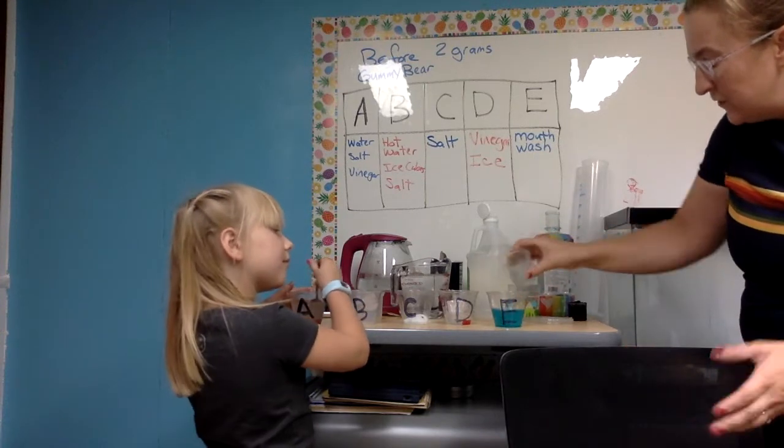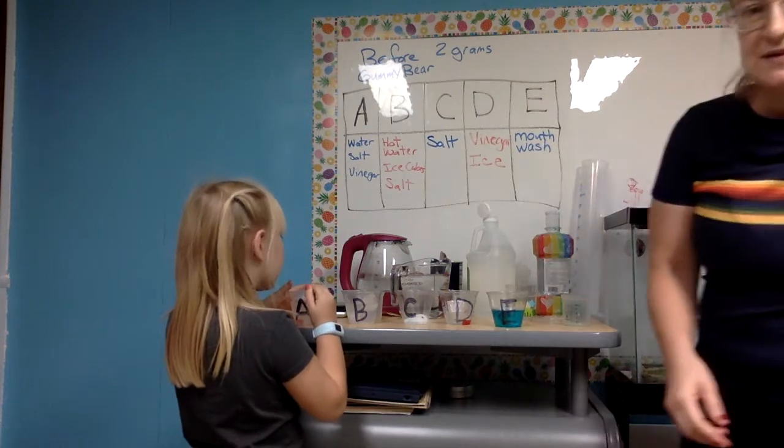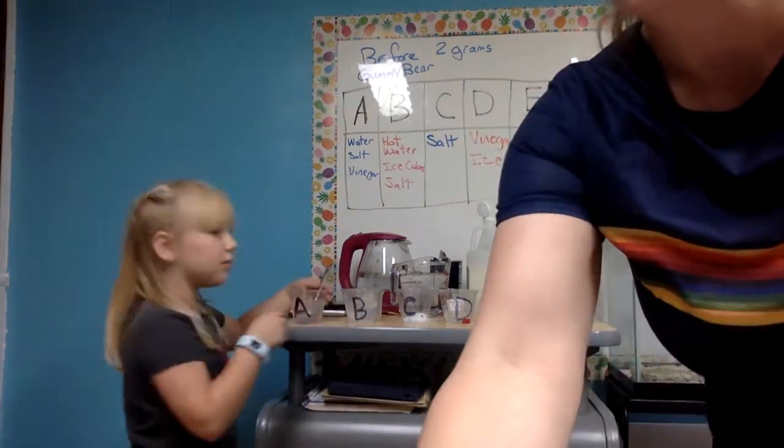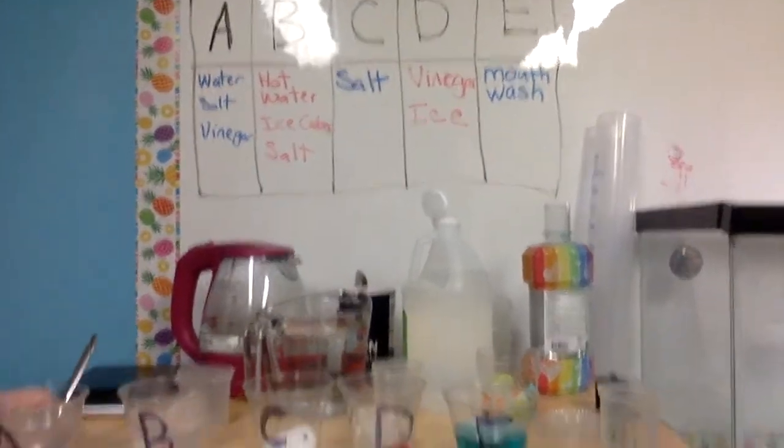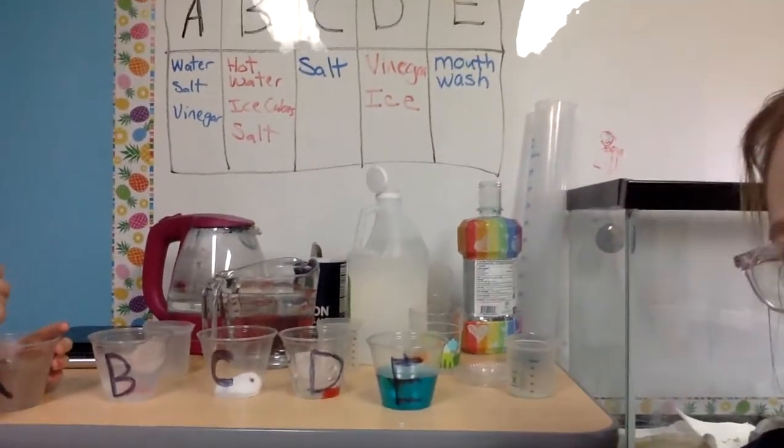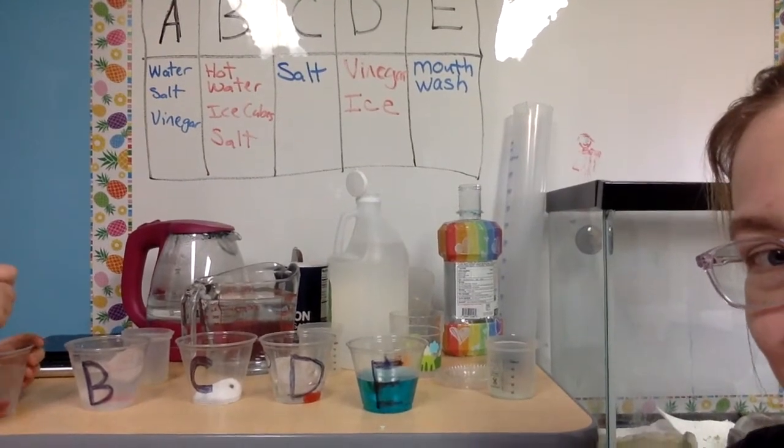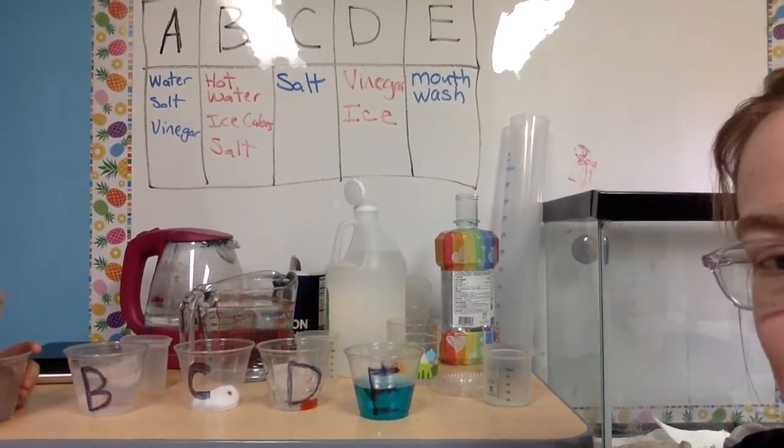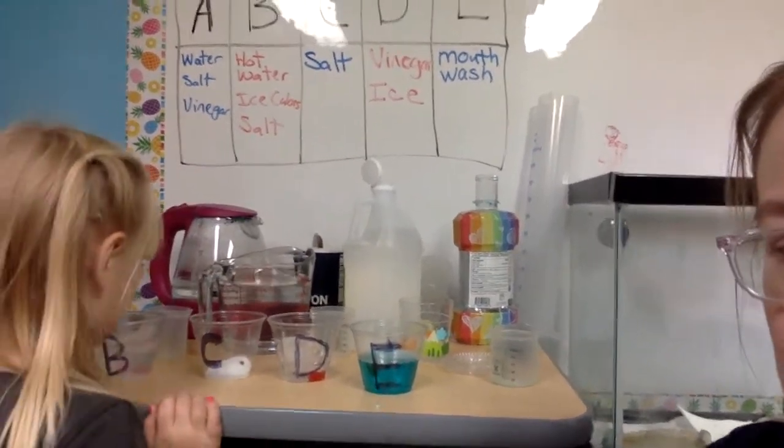So I don't know what's going to happen to these five gummy bears. But we are doing an experiment to figure it out. You should be quieter, Eleanor. So here you go, fifth grade, a better view. A, B, C, D, and E. A is water, salt, and vinegar. B, hot water, ice cubes, and salt. C was just salt. D is vinegar and ice. And E is mouthwash. We will see what happens. Thanks, fifth grade.